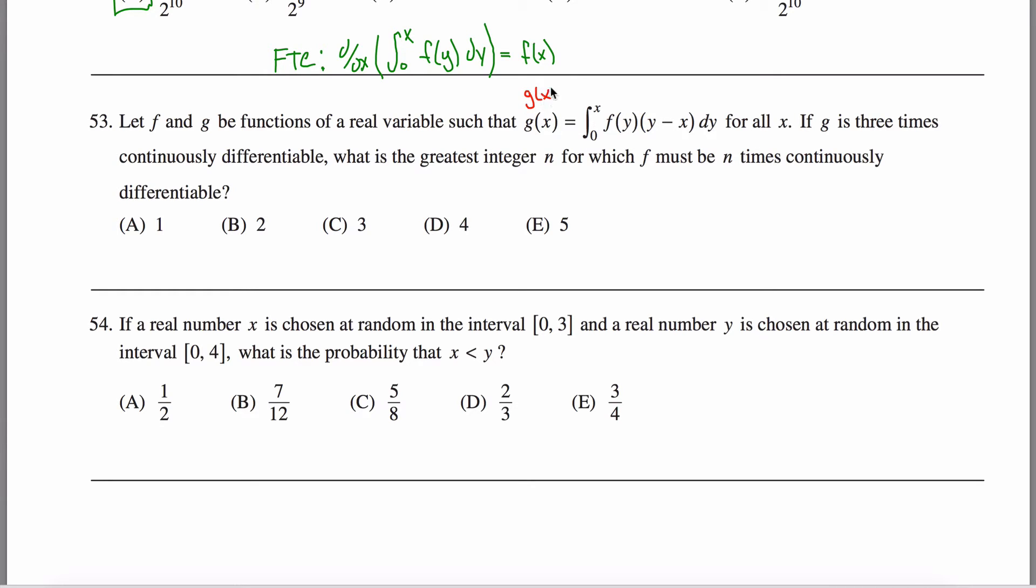I'm going to say that g of x is equal to the integral from 0 to x of, essentially what I'm going to do is I'm going to take this function f of y here and distribute it into these parentheses. So I got y times f of y minus x times f of y, but instead of writing minus x times f of y, I'm going to note that my variable of integration here is y, right, f of y dy.